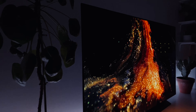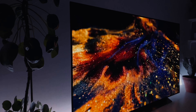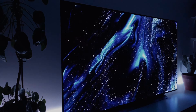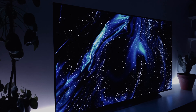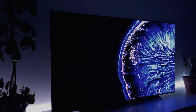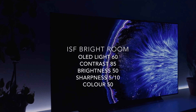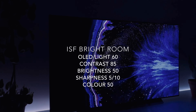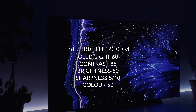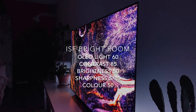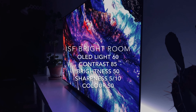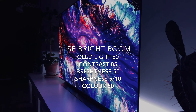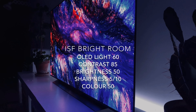For cable TV I'm using ISF Brightroom. For me this is the most accurate picture mode. I'm keeping my OLED light on 60, contrast 85, brightness on 50, and sharpness I usually put 10.